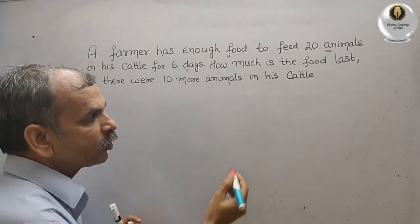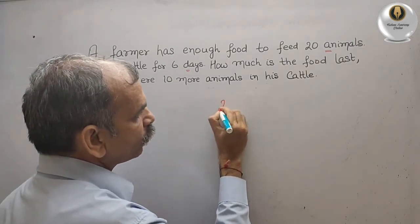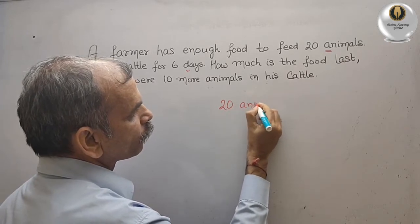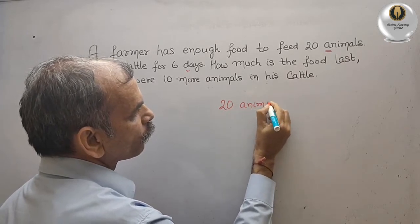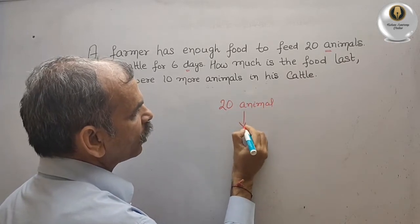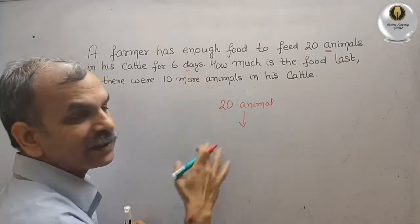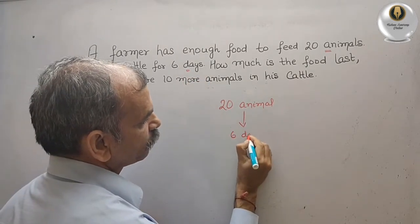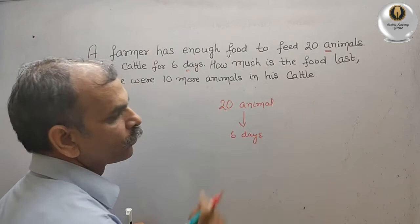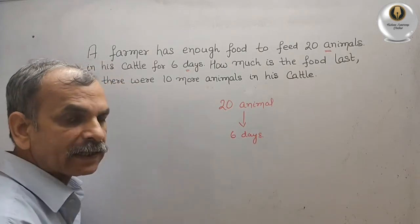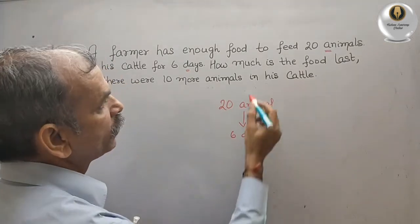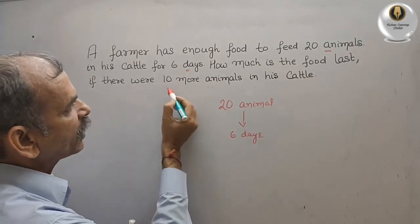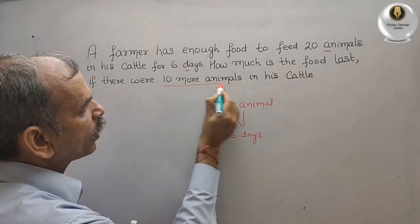So you can see: there are 20 animals and they last for 6 days. The second condition is: how long will the food last if there were 10 more animals?